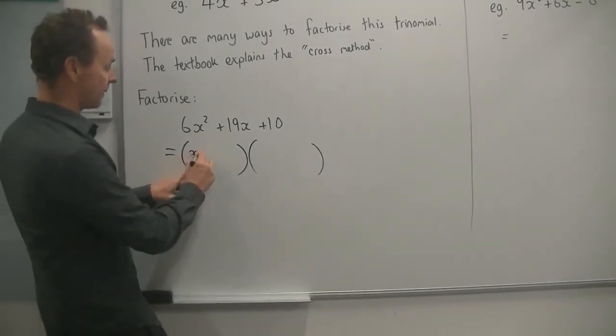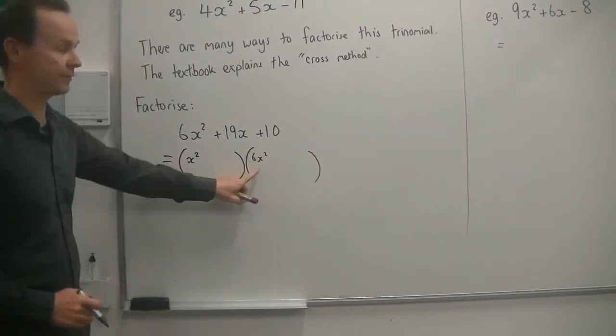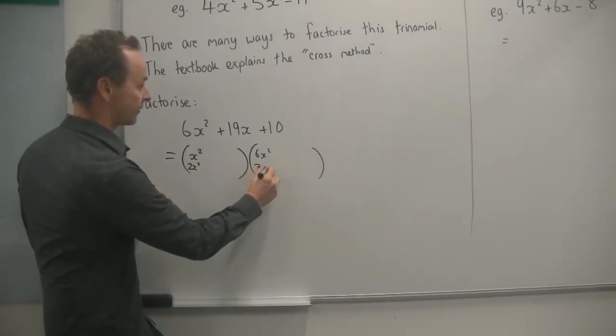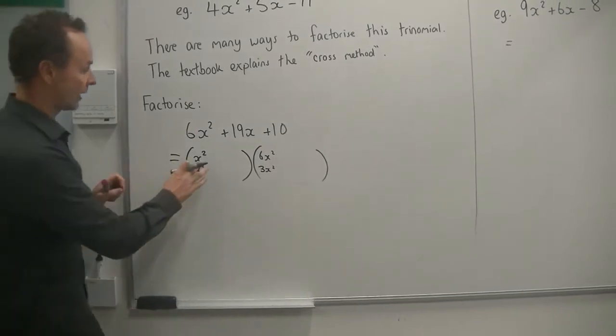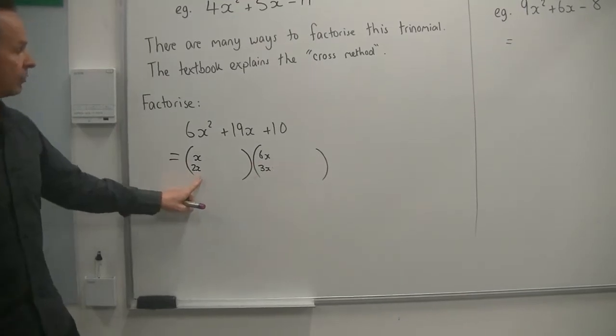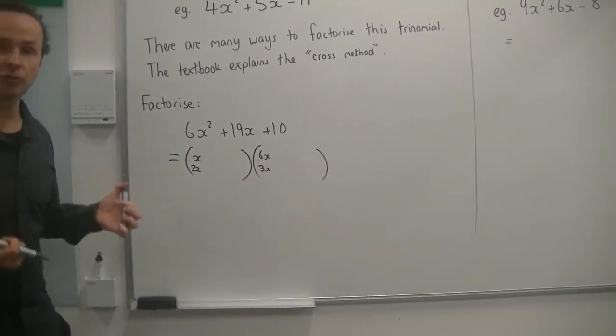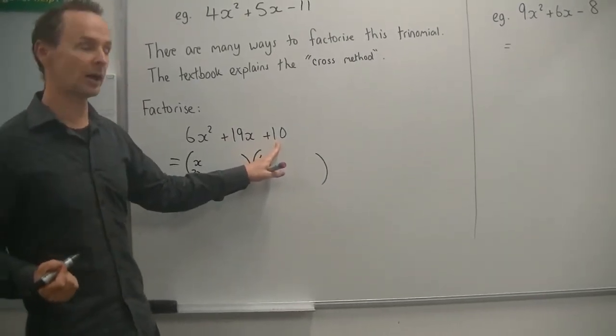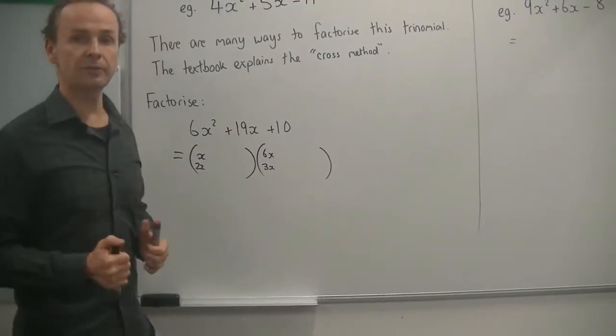But this time we've got 6x squared. So this makes it a little bit more complicated. We've got a couple of possibilities. We could have a 1x and a 6x there because factors of 6 are 1 and 6. Or we could have a 2x and a 3x there. Because when you multiply 2x by 3x, you end up with 6x squared. So you've got extra possibilities. And then of course the factors of 10, 1 and 10 and 2 and 5. So you've got a whole range of different possibilities.